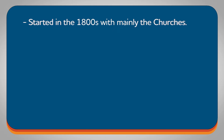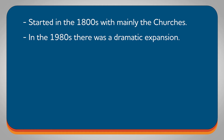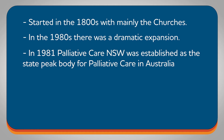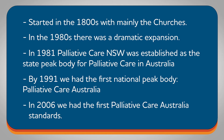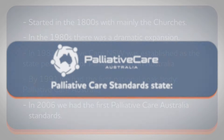The history of palliative care in Australia started in the 1800s with mainly the churches and still a cancer focus. In the 1980s there was a dramatic expansion, and by 1991 we had the first peak body, Palliative Care Australia. In 2006, we had the first Palliative Care Australia standards.